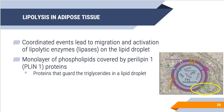Lipolysis is a coordinated event which leads to the migration and activation of lipolytic enzymes called lipases on the lipid droplet — things like hormone-sensitive lipase. We also have a monolayer of phospholipids surrounding our lipid droplet, and importantly, attached to that monolayer is something called perilipin-1. Perilipin-1 is a protein that guards the triglycerides in the lipid droplet — it kind of holds them within that shape when we don't need fat to be broken down. Perilipin-1 is strictly associated with adipose tissue.